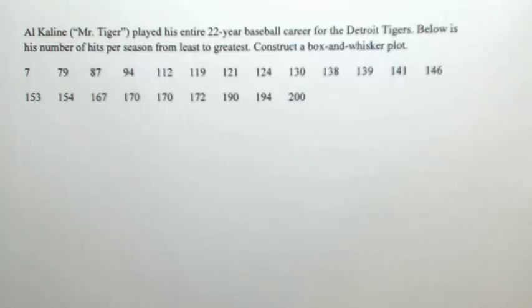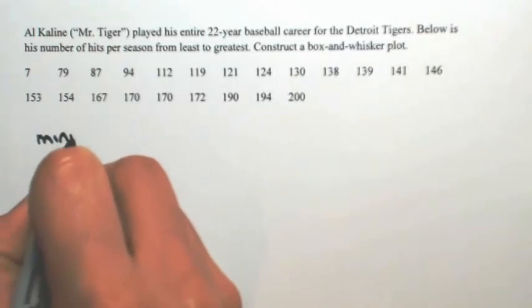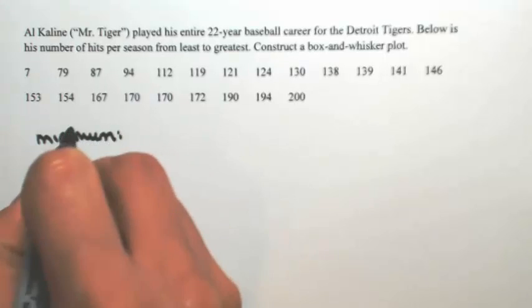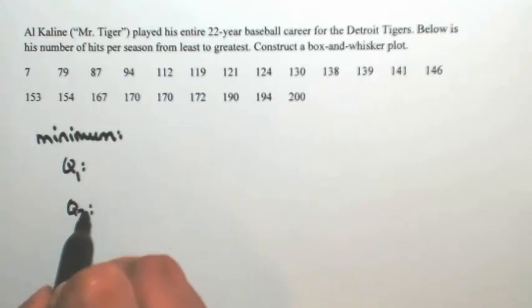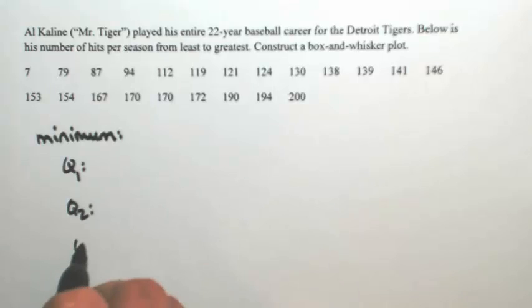We're going to identify five key things. The first thing we're going to identify is the minimum number. We'll identify the first quartile (Q1), the second quartile, the third quartile, and then the maximum.